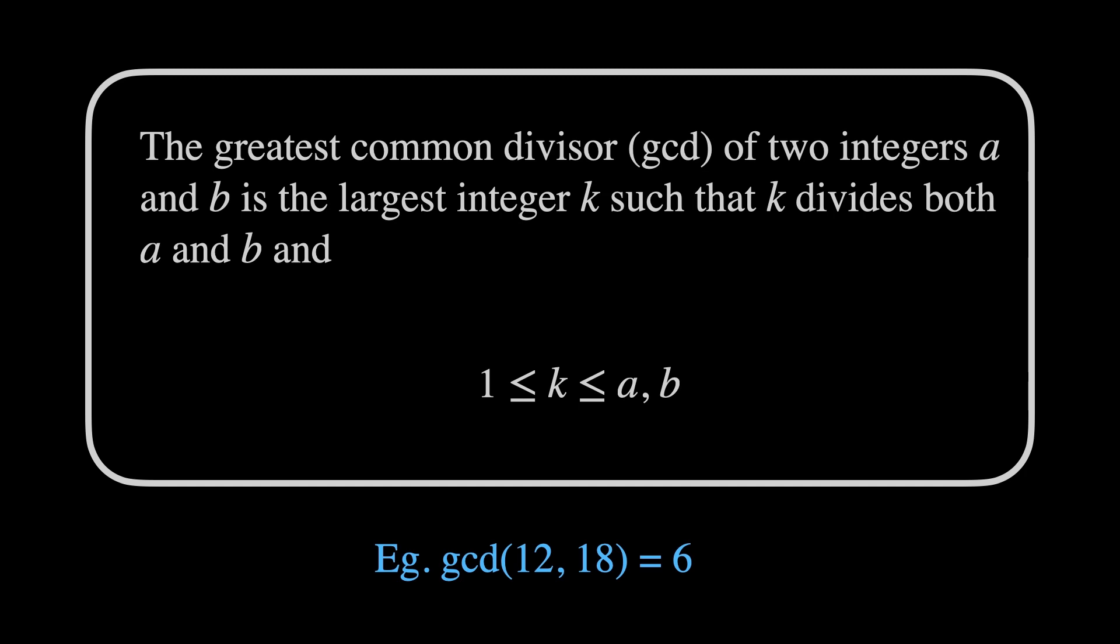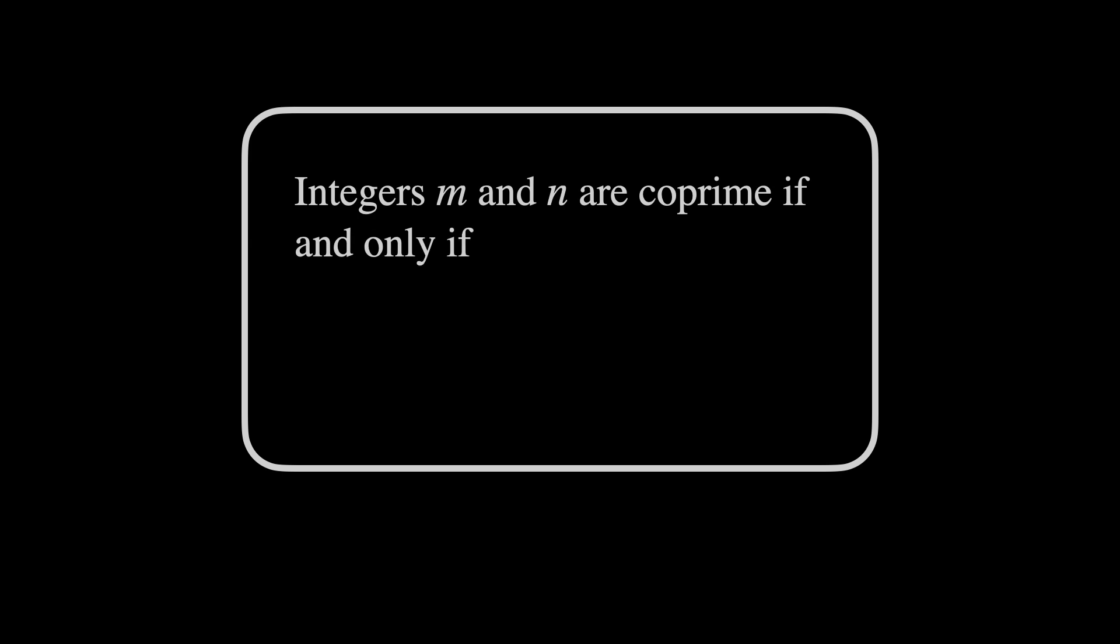Now, we're ready to define what it means for two integers to be co-prime. The integers M and N are co-prime if and only if their greatest common divisor is 1. For example, the greatest common divisor of 11 and 12 is 1 and so 11 and 12 are co-prime.